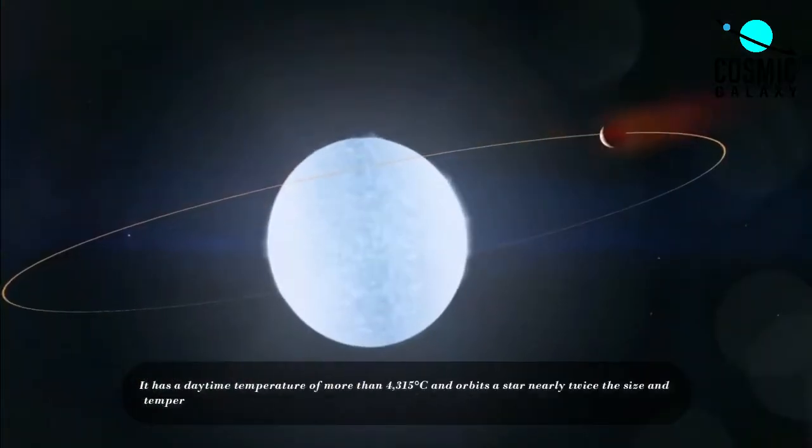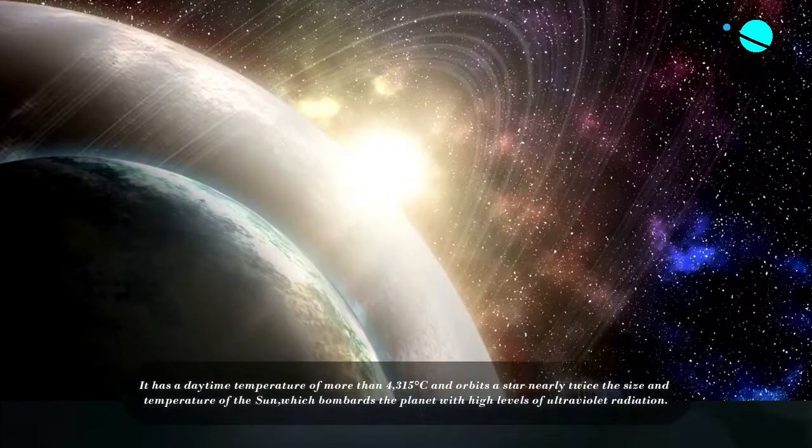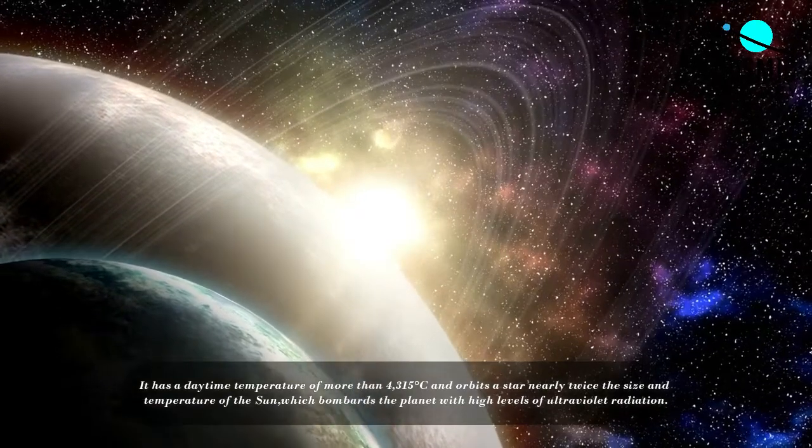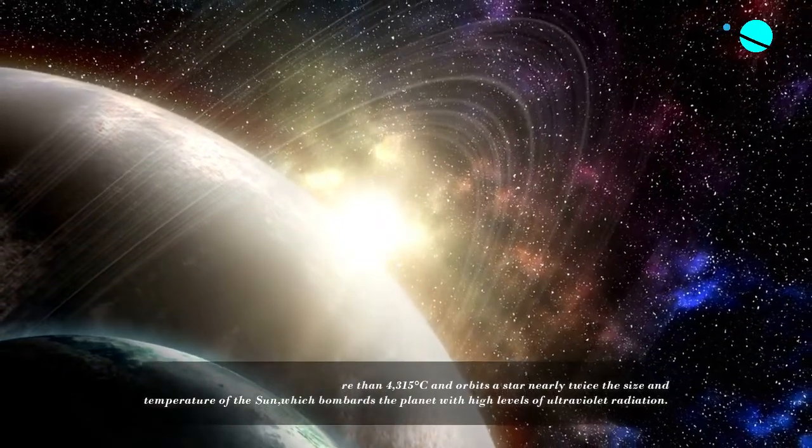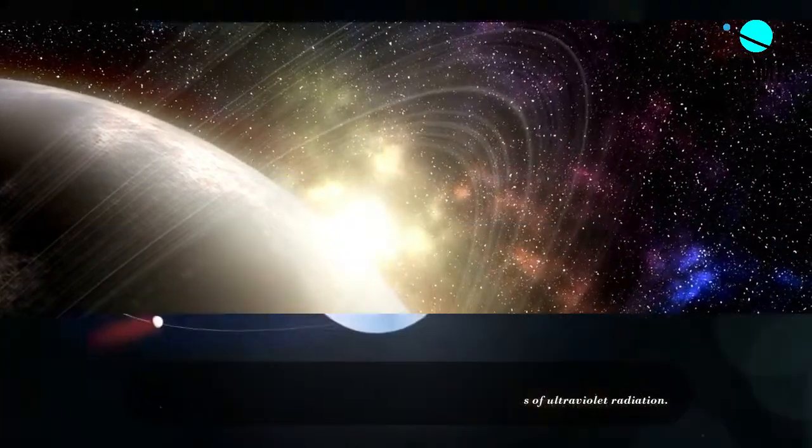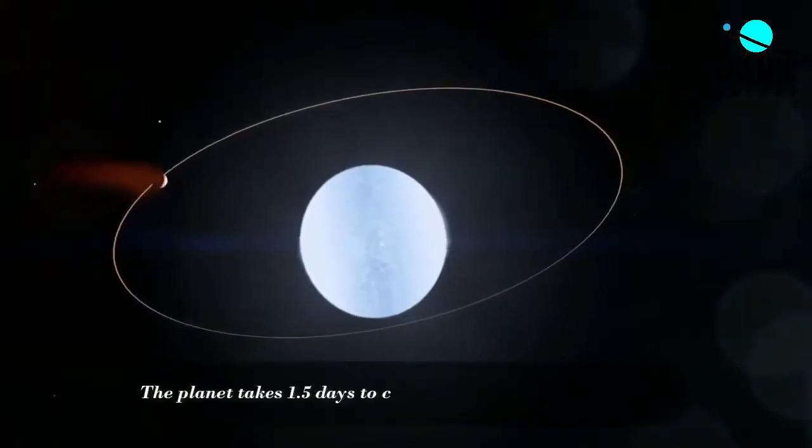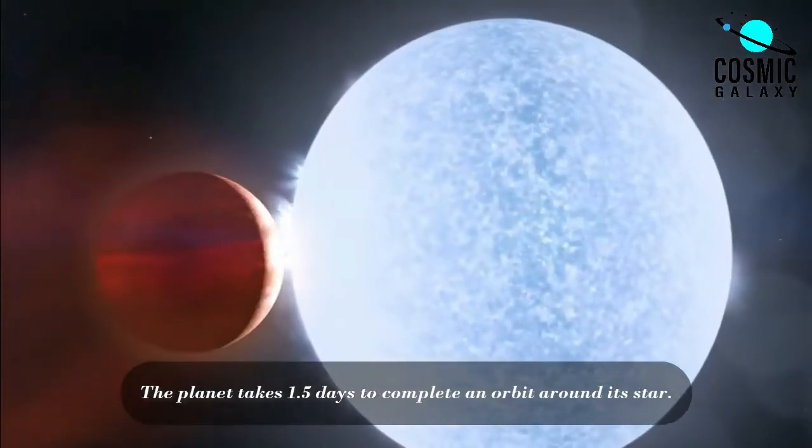It has a daytime temperature of more than 4,315 degrees Celsius and orbits a star nearly twice the size and temperature of the Sun, which bombards the planet with high levels of ultraviolet radiation. The planet takes 1.5 days to complete an orbit around its star.